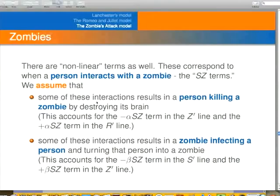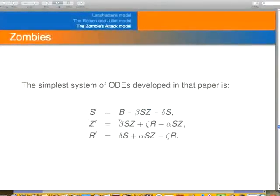And then there are some other terms that correspond to interactions. There's this term here that corresponds to a person killing a zombie by shooting in the brain. And so the people represented by S will interact with the zombies represented by Z, roughly in proportion to the product.